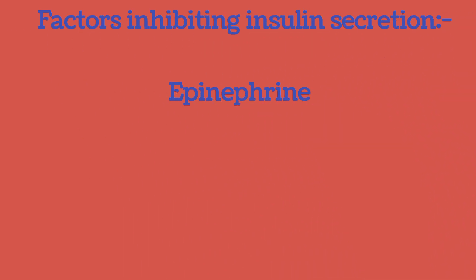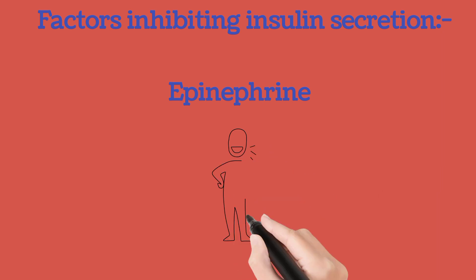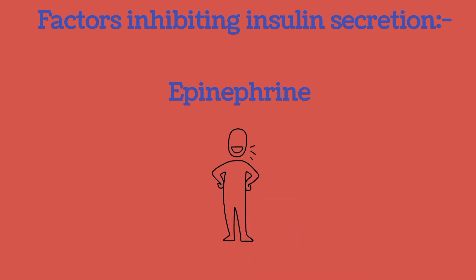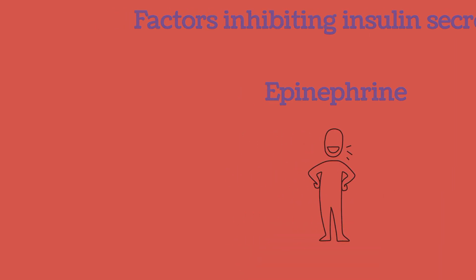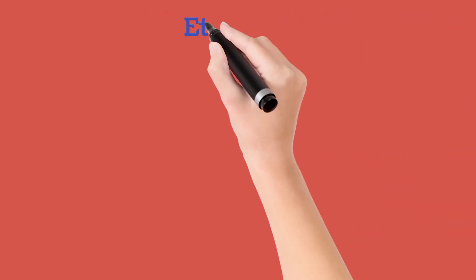Now, how is insulin produced? Insulin is produced by beta cells in the islet of Langerhans of the pancreas.